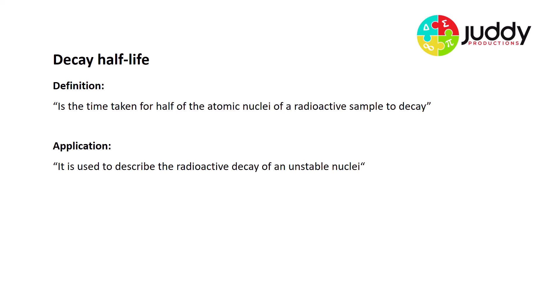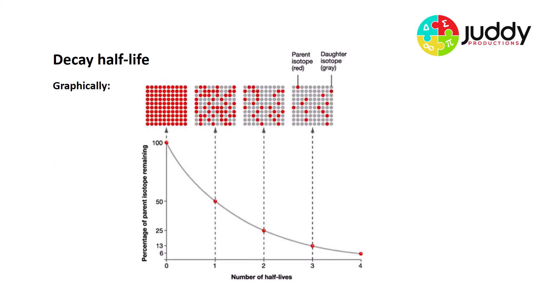Application-wise, it's used to describe the radioactive decay of an unstable nuclei. Consider that at the start, at time zero, we have 100% of one particular isotope — the parent isotope, shown in red. After a period of time called one half-life, only half of those red dots remain; the rest have been replaced by gray dots, which we call the daughter isotope. On the graph, we've gone from 100% at time zero down to 50% at one half-life.